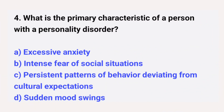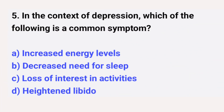Question number four: what is the primary characteristic of a person with a personality disorder? The right answer is option C: persistent patterns of behavior deviating from cultural expectations. Question number five: in the context of depression, which of the following is a common symptom? The right answer is option C: loss of interest in activities.